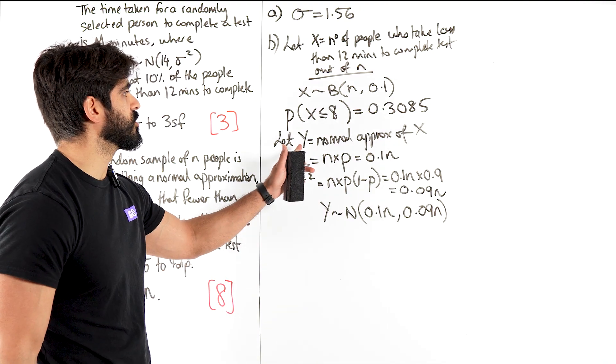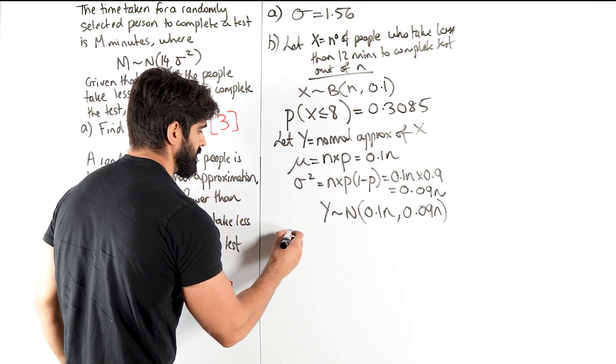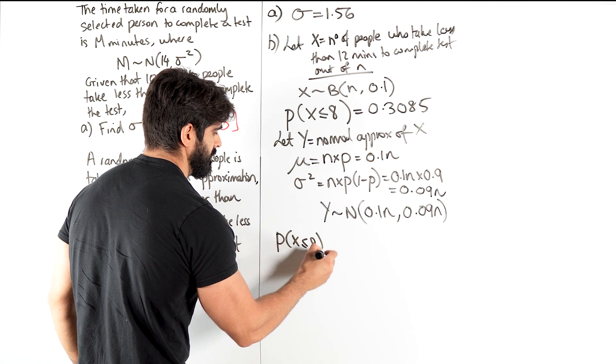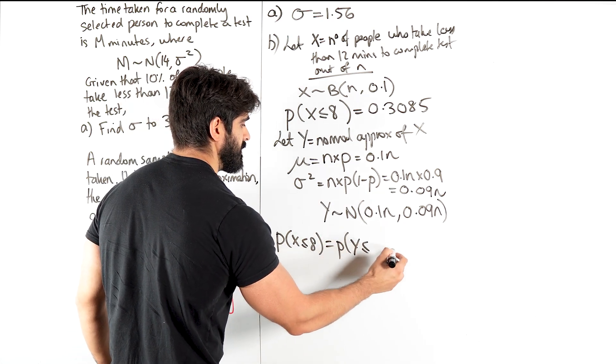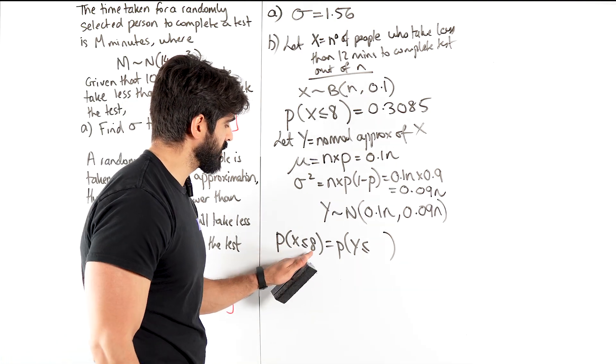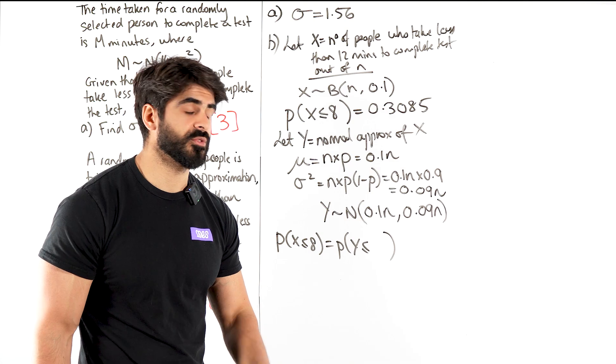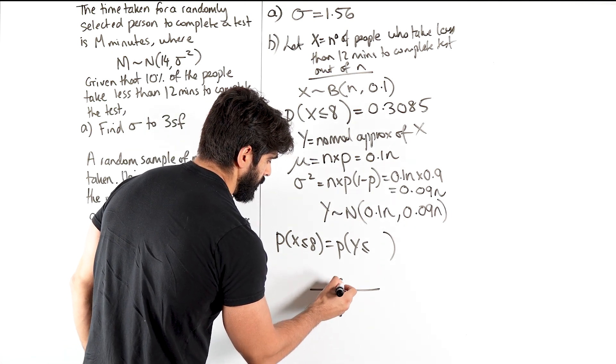So my normal distribution for Y is normally distributed with mean 0.1n and variance 0.09n. Now we can go into the normal distribution. So from this, the probability that X is less than or equal to 8. As we move into the normal distribution, we now need to consider the continuous variables. So less than or equal to 8, we need to think about all the values that could have run into this. This is a continuity correction.